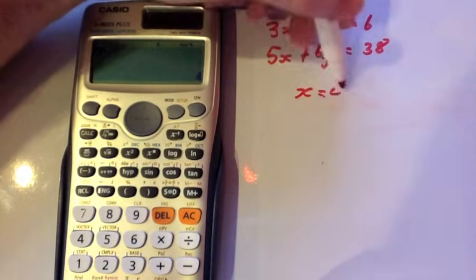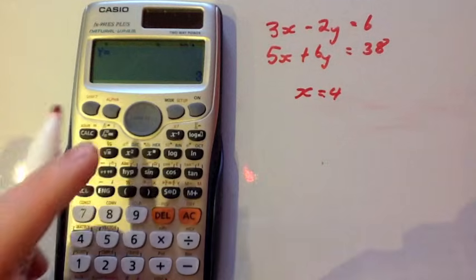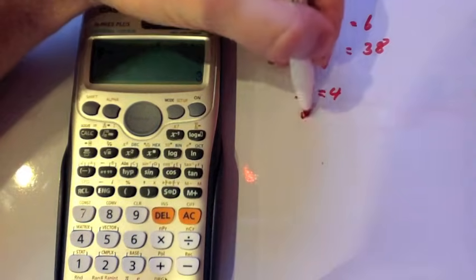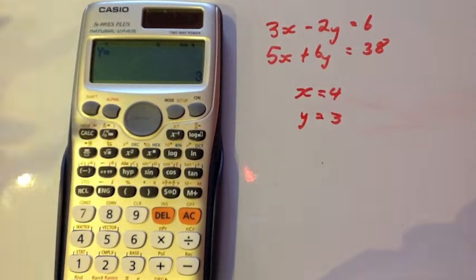X is equal to 4. If we press equals again, we've got Y is equal to 3. Obviously you would show your method, you would do the question as normal, and this is quite reassuring just to check your answers.